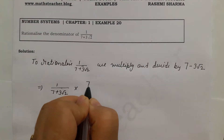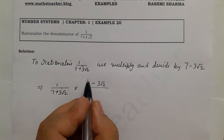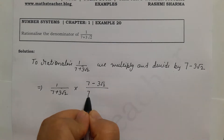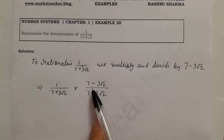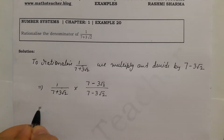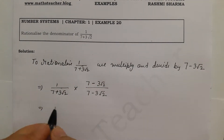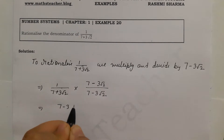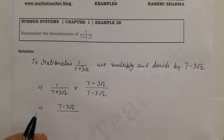We apply the minus sign in the conjugate. The numerator: 1 multiplied by 7 minus 3 root 2 remains 7 minus 3 root 2, because multiplying any number by 1 gives the same number — for example, 100 times 1 is 100.